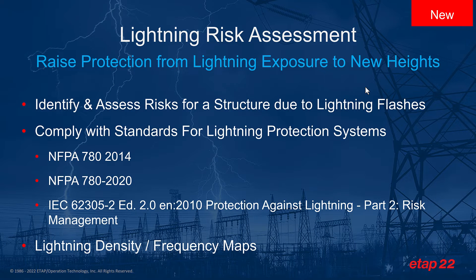Another new capability that we've added to our safety portfolio is lightning risk assessment. Lightning risk assessment allows us to raise the protection from lightning exposure to new heights, by identifying and assessing the risk for a given structure due to lightning flashes or lightning incidents that may happen around that area. The lightning risk assessment calculator allows us to comply with standards for lightning protection systems such as NFPA 780 2014 and 2022 standards, as well as IEC 62305 edition 2, which gives us the ability to define protection against lightning and do certain risk management.